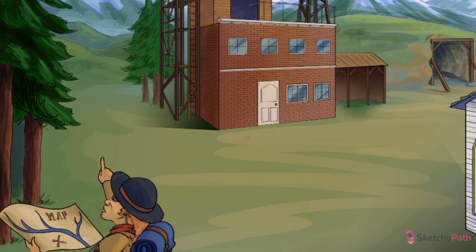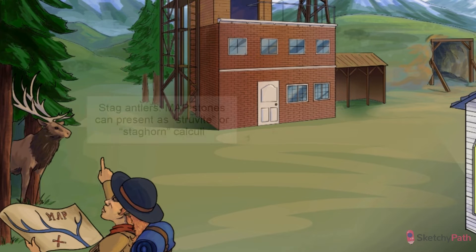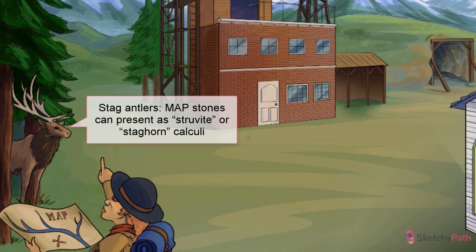MAP stones are also called struvite or staghorn calculi. These stones can get huge. As they accumulate, they can form a cast of the renal pelvis and calyces, forming a branching pattern that resembles the antlers of a stag. It's the most majestic of stones.